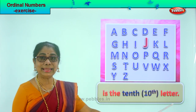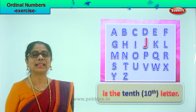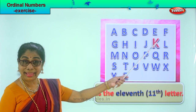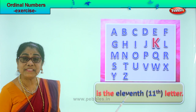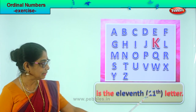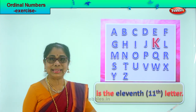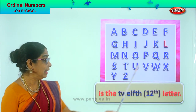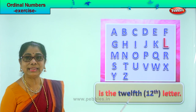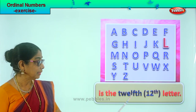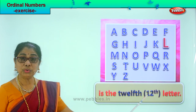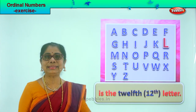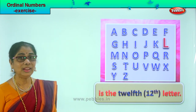After J, K — K is the eleventh letter. Write eleven and TH. K is the eleventh letter. Next, L — L is the twelfth letter. Look at the spelling: twelfth. You write twelve and TH. L is the twelfth letter.